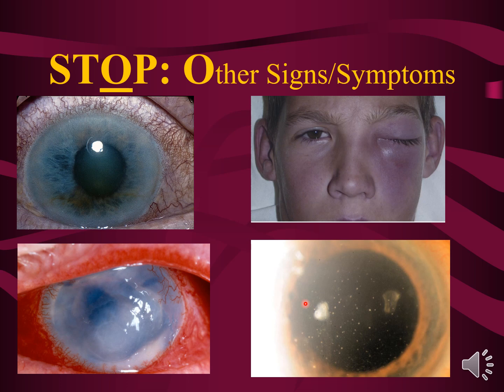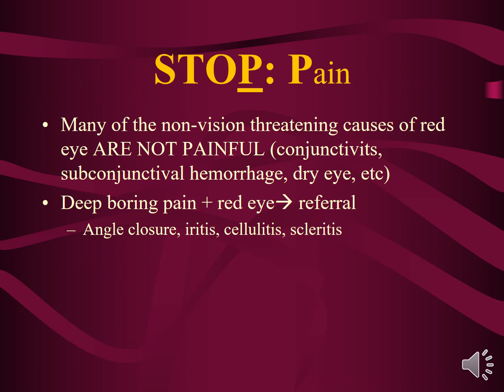Iritis can present with sensitivity to light, and on slit lamp you can see small white dots — inflammatory cells on the inside of the cornea. This brings us to the final component: pain. Many non-vision-threatening causes of red eye are not painful — conjunctivitis, subconjunctival hemorrhage, dry eye. However, someone with pain, especially deep boring pain, may have something serious requiring urgent ophthalmology referral, such as angle closure glaucoma, iritis, cellulitis, or scleritis.